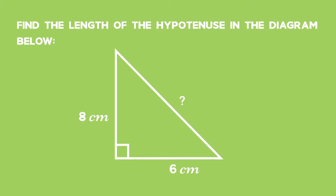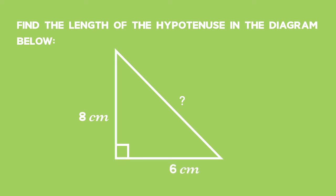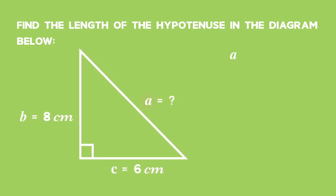Here we are given that the two shorter sides have lengths 8 cm and 6 cm. From Pythagoras' theorem, if I label each of these sides as A, B, C, we know that A squared is equal to B squared plus C squared.